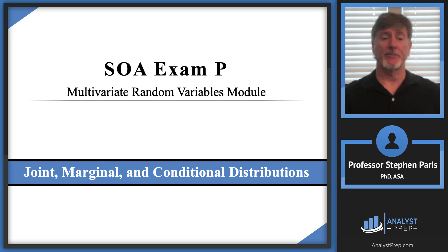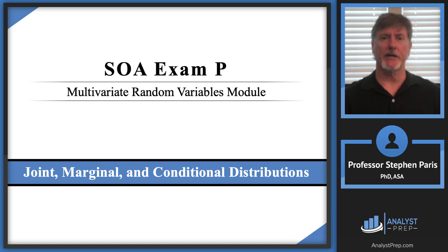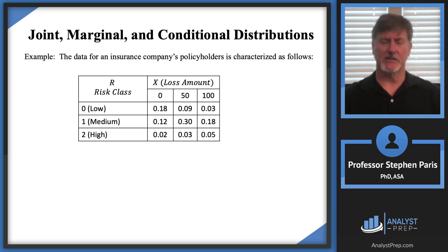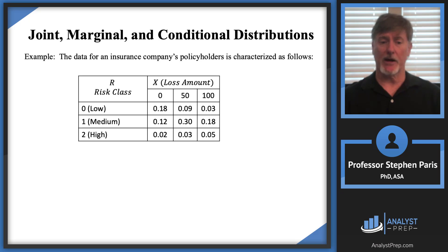Hi, this is the first video in the multi-random variable module and we're going to discuss joint, marginal, and conditional distributions. Let's look at an example. We have data from an insurance company's policyholders, characterized by risk class — low, medium, or high — and loss amount observed as either 0, 50, or 100.